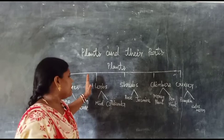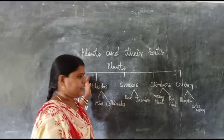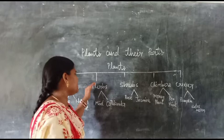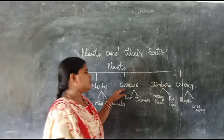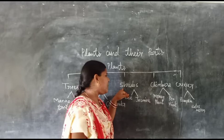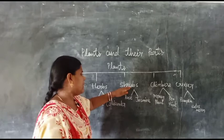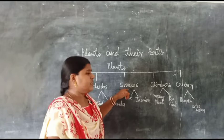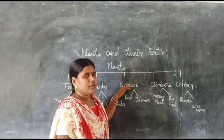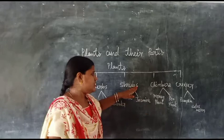Now let us know about herbs. Herbs are very small plants and their stems are green in colour. They can stand erect. Examples of herbs are mint, coriander, and grass. Now, shrubs are plants that are taller than herbs. They are bushy plants with strong stems and many branches. Examples of shrubs are the rose plant and jasmine plant.